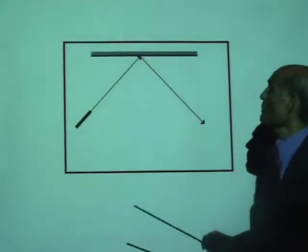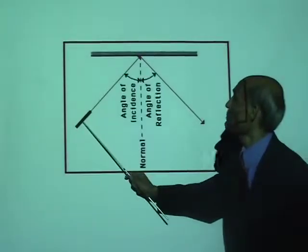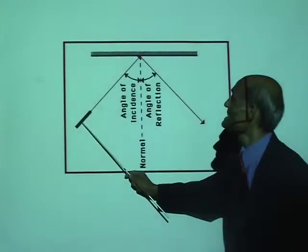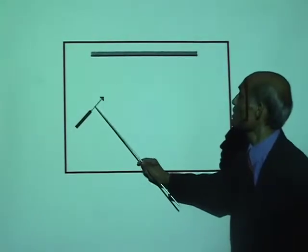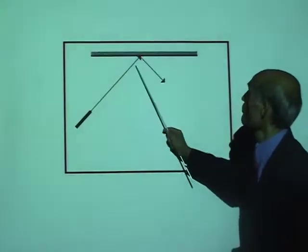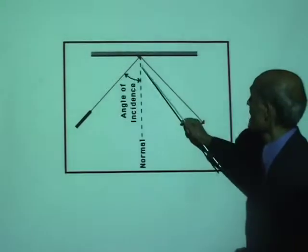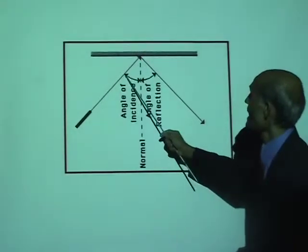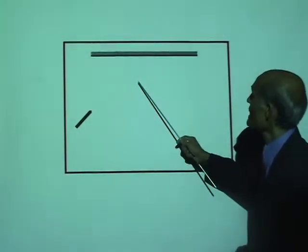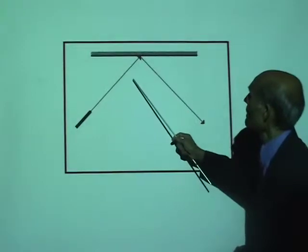Now watch what happens. A ray of light starting from here falls on the mirror and gets reflected. That is the normal. The angle of incidence equals the angle of reflection.